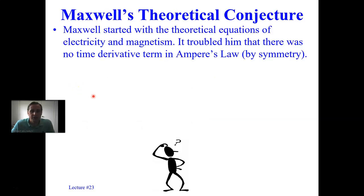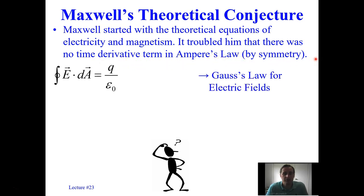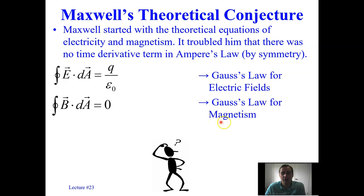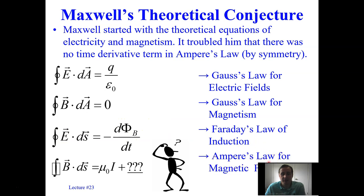Here's Maxwell's theoretical conjecture. Maxwell was a brilliant theoretical physicist who started with the theoretical equations of electricity and magnetism that existed before his time. It troubled him that there was no time derivative term in Ampere's law by symmetry. He started with four equations: Gauss's law for electric fields, Gauss's law for magnetism, Faraday's law for induction, and Ampere's law for magnetic fields.